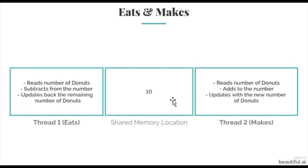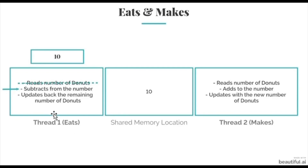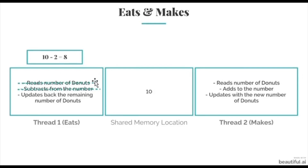It's not necessarily true that thread one starts execution first, but let's say that it does. Thread one reads the number of donuts in the shared memory and keeps it in a temporary register only for thread one — it reads 10. Next, it subtracts from this number; say thread one is going to eat two donuts, so it subtracts 2 from 10, giving us 8. Notice that thread one subtracted from the temporary register, not from the shared variable — updating the shared variable is a completely different step. But let's say thread one gets preempted, meaning something stops it from completing its execution.